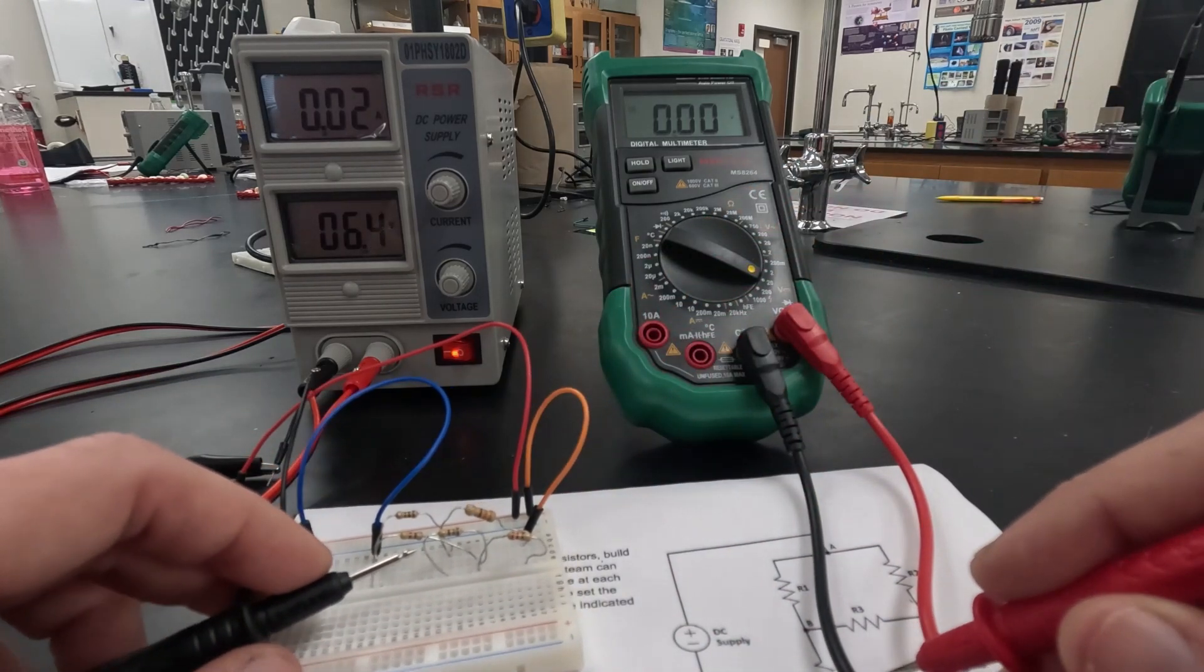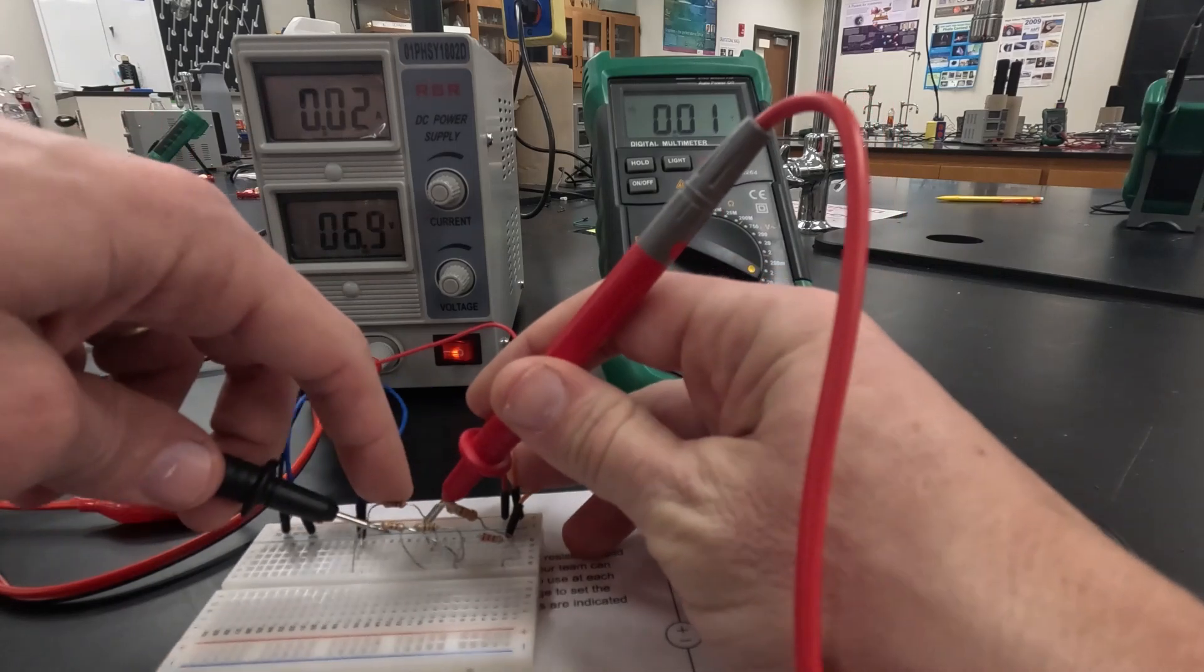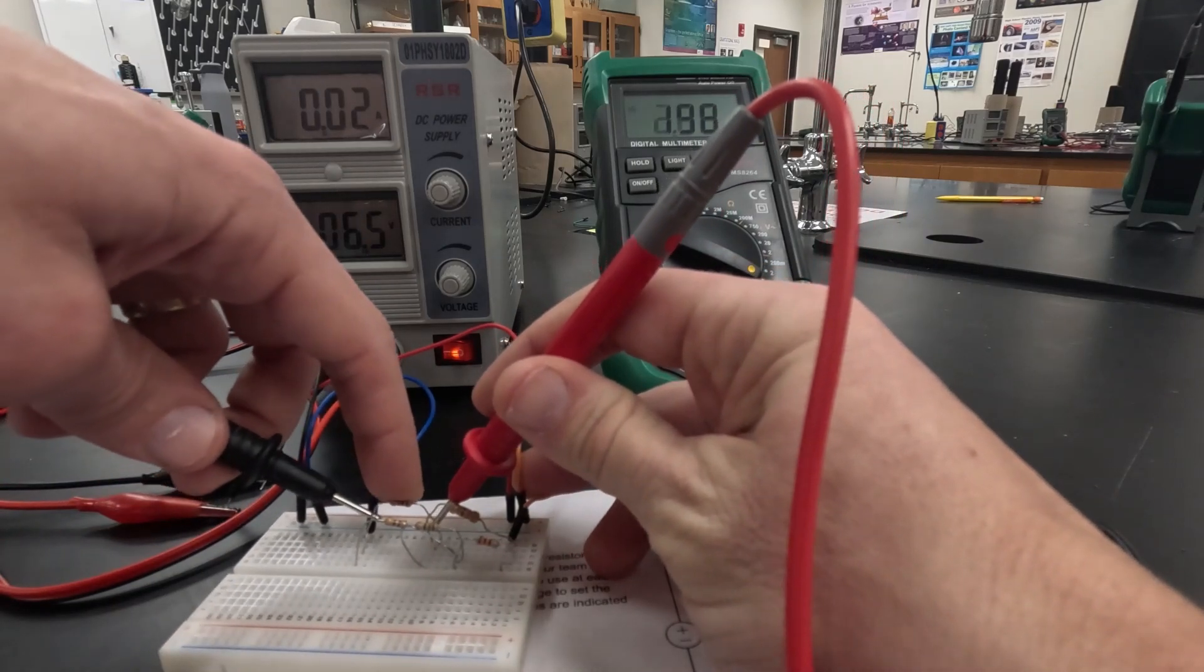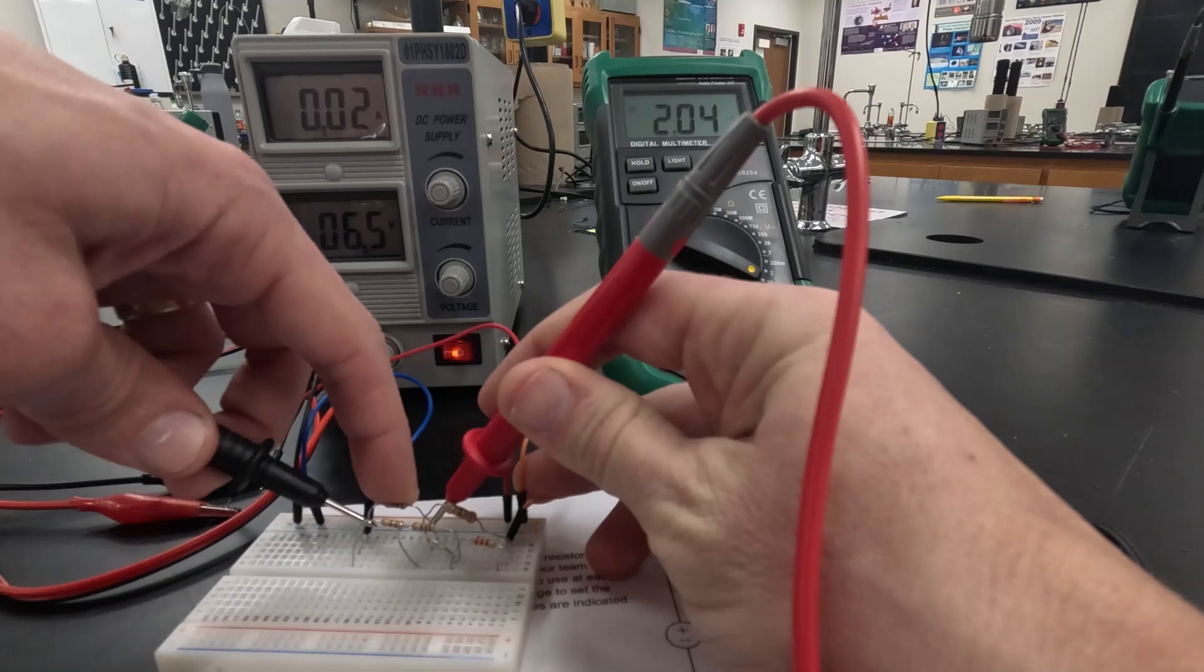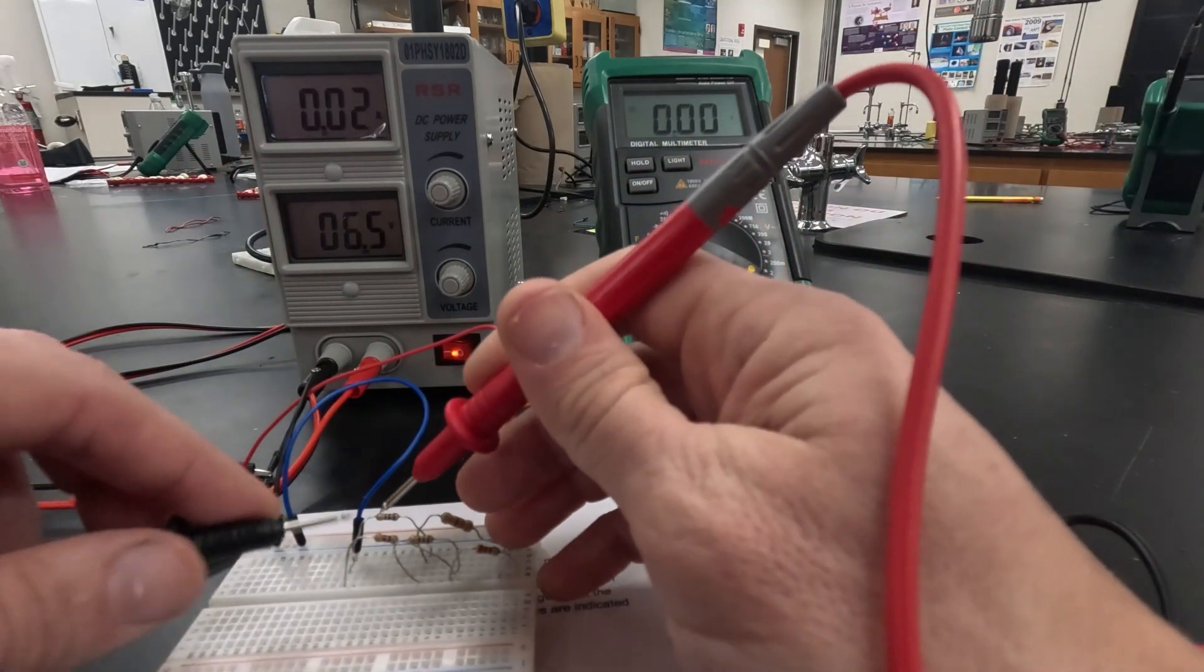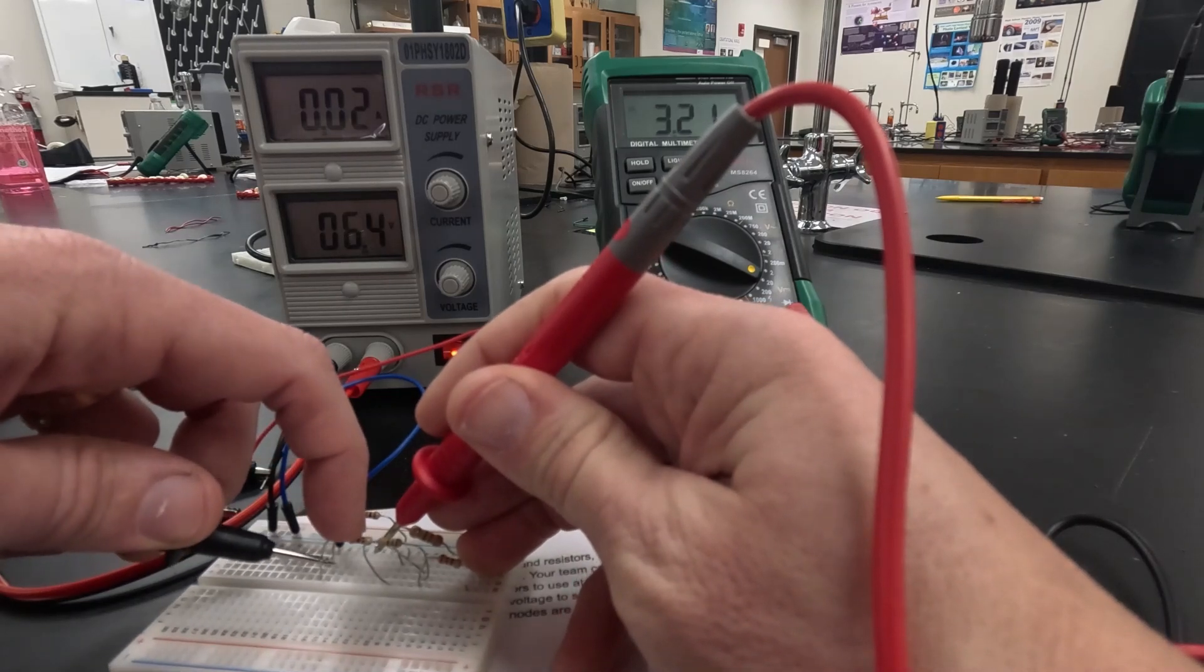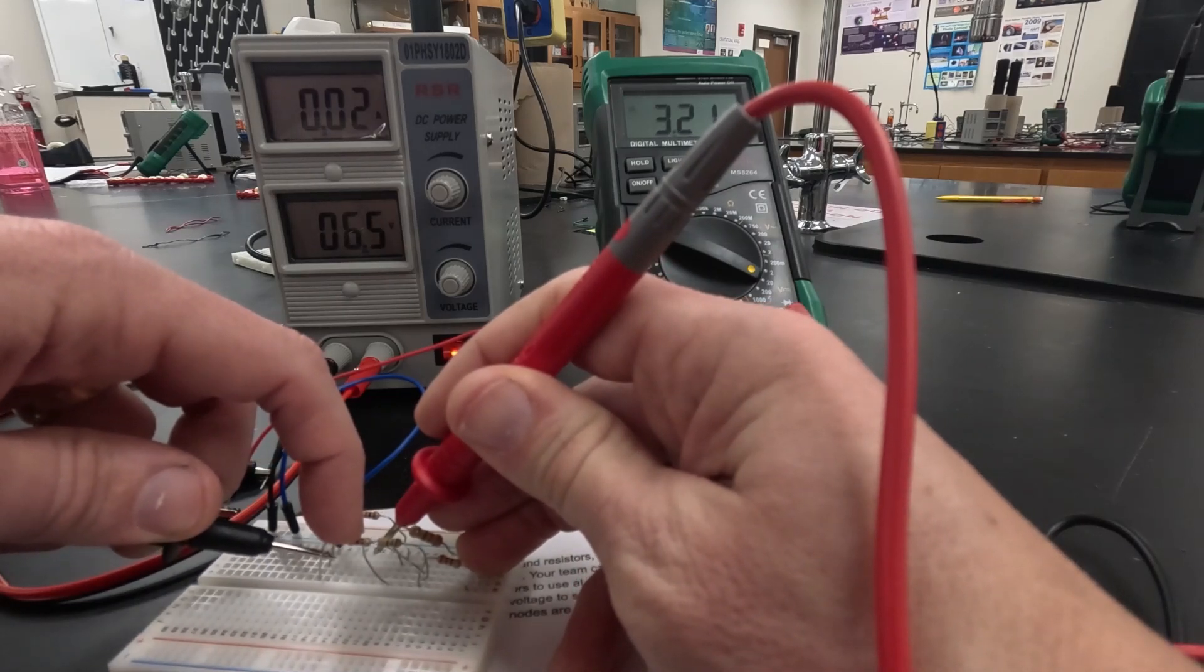Next I'm going to go to my R4 which is this 100 ohm resistor over here. When I do that I get a voltage of about 2.04 volts. And finally we go to our R5 which is that 470 ohm resistor. When we do that we get about 3.21 volts.